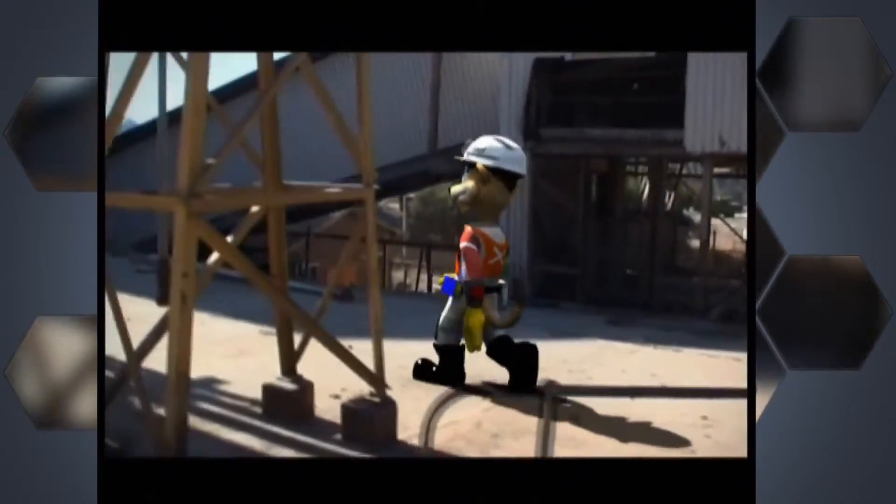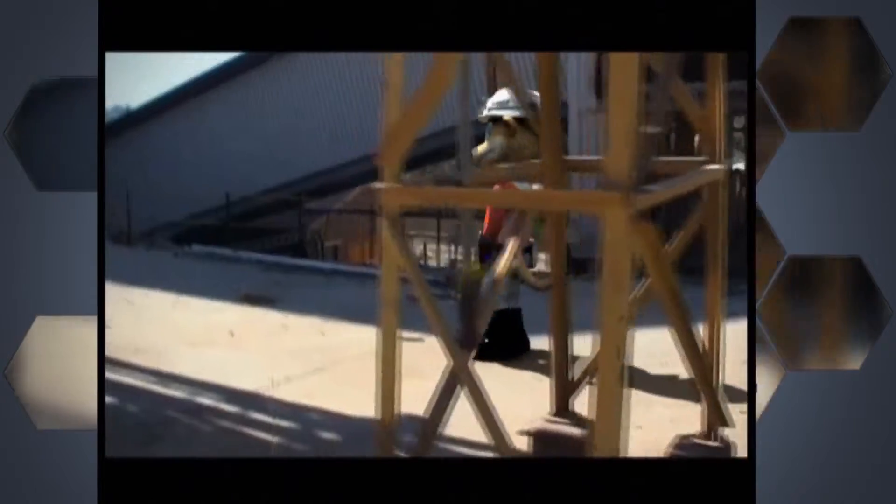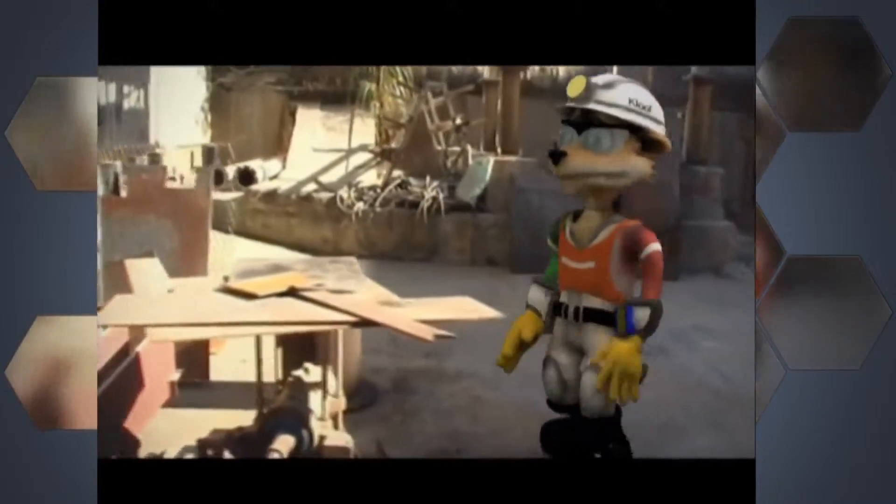Here we have a real person with a character. Here we've got a character walking behind struts. So we've masked out the struts and put the character behind that. Here we've deliberately rotated the camera. I'll just hit pause there.